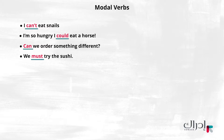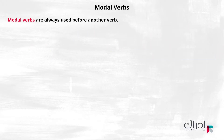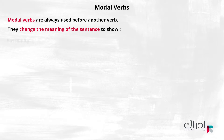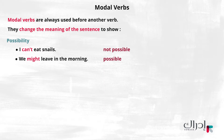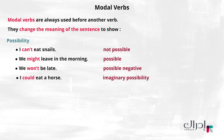The underlined words in the sentences above are called modal verbs or modal auxiliaries. These are the words that make language expressions more interesting. Modal verbs are always used before another verb. They change the meaning of the sentence to show the following: I can't eat snails — not possible. We might leave in the morning — possible. We won't be late — possible negative. I could eat a horse — imaginary possibility.